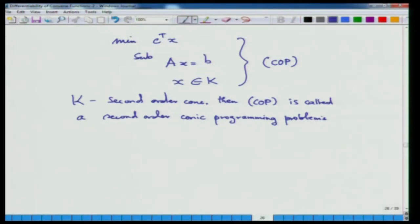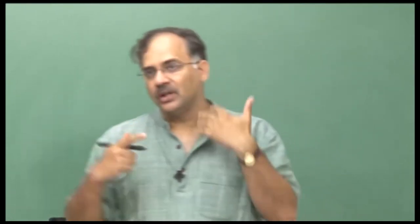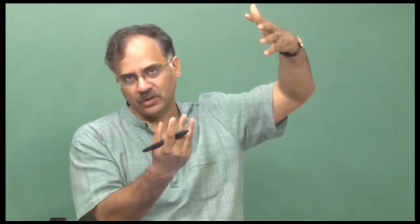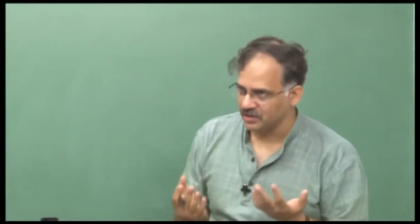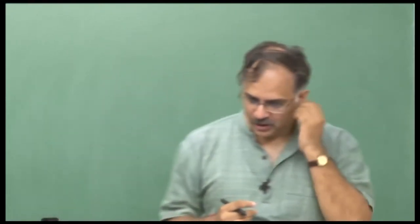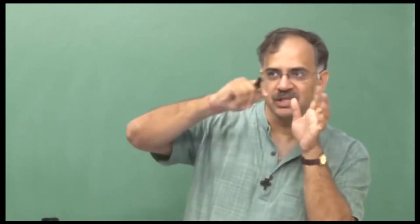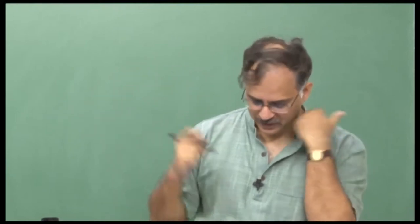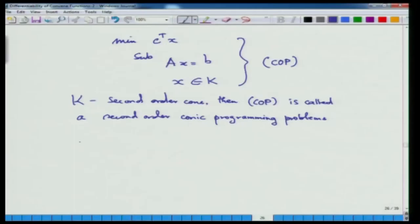A lot of important application problems can be modeled as a second-order conic programming problem. Now, we have been concerned with x in ℝⁿ, but ℝⁿ is not the only finite-dimensional space. Any finite-dimensional space of dimension n has a bijection with ℝⁿ naturally, but it does not mean we cannot look at other frameworks. For example, a set of matrices. We have spoken about semi-definite programming. If we look at finite-dimensional spaces from a basis-free point of view, we are essentially talking about any finite-dimensional space. So we are now going to talk about semi-definite programming.